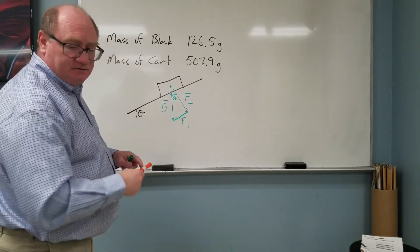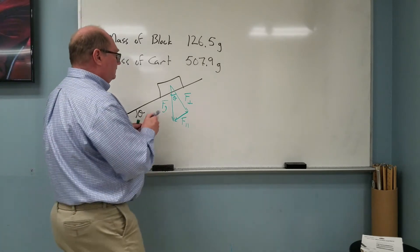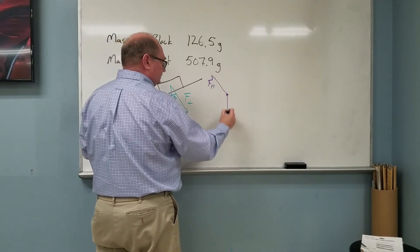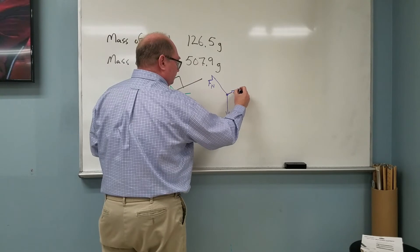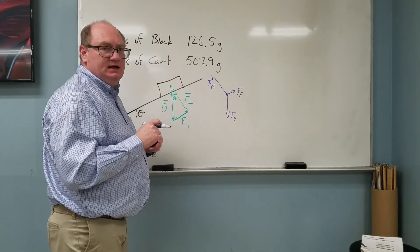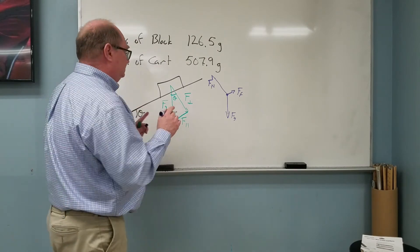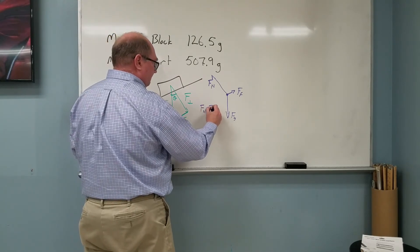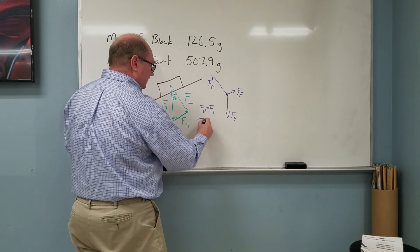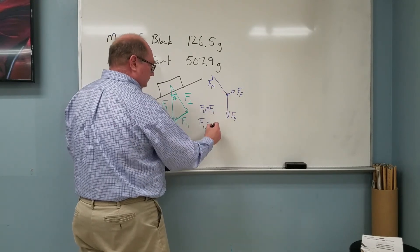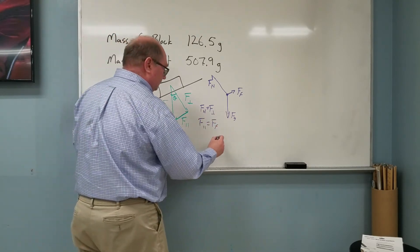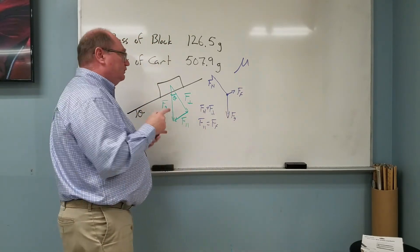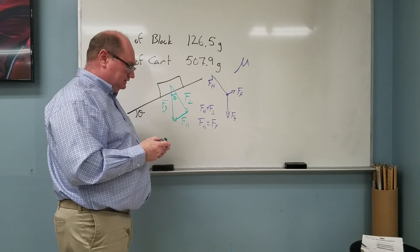Gravity acting down, normal force going this way, and our friction back this direction. If it's moving at a constant speed, that means the normal force should be equal to the force perpendicular, and the force parallel should equal the force of friction. Between those, you should be able to figure out what the coefficient of friction — whether it's static or kinetic — is for that situation. Go ahead and make those calculations and see what you get.